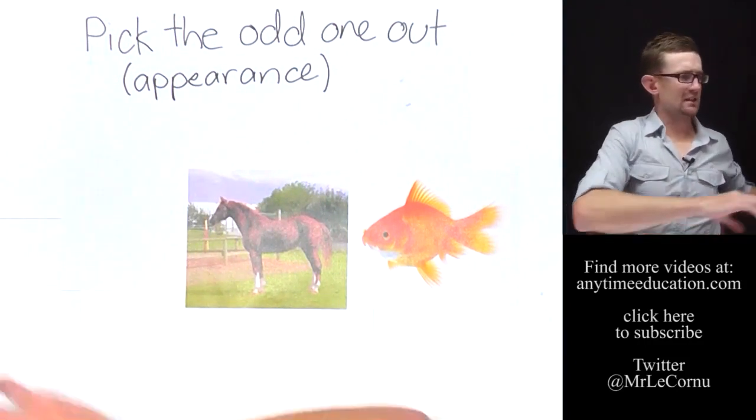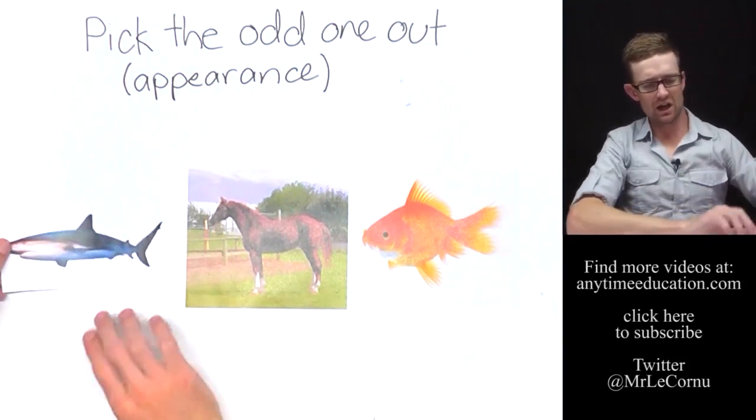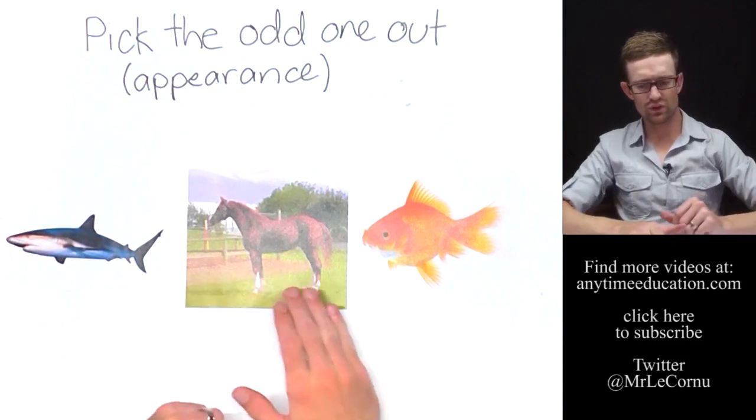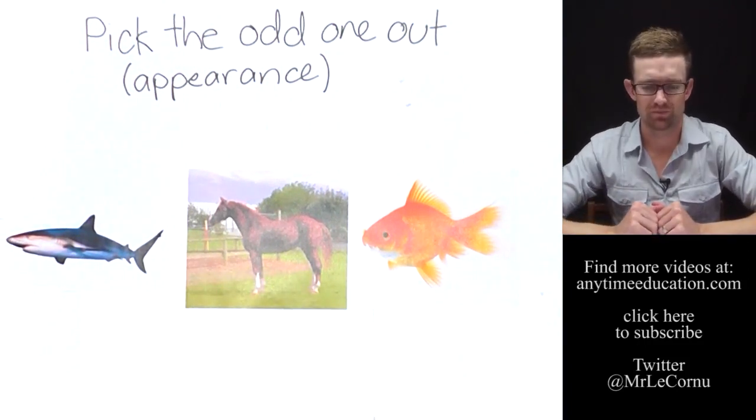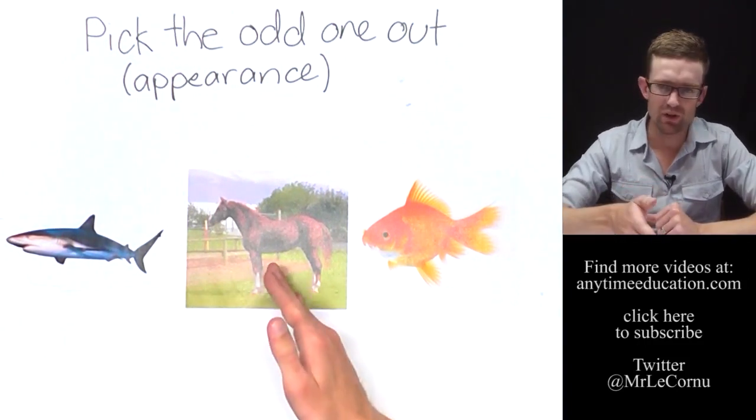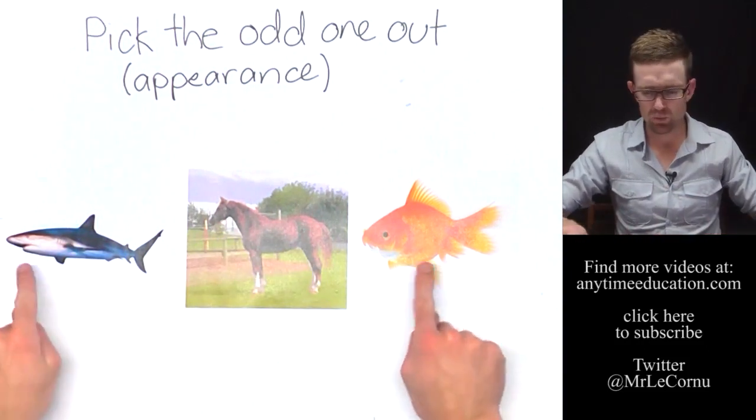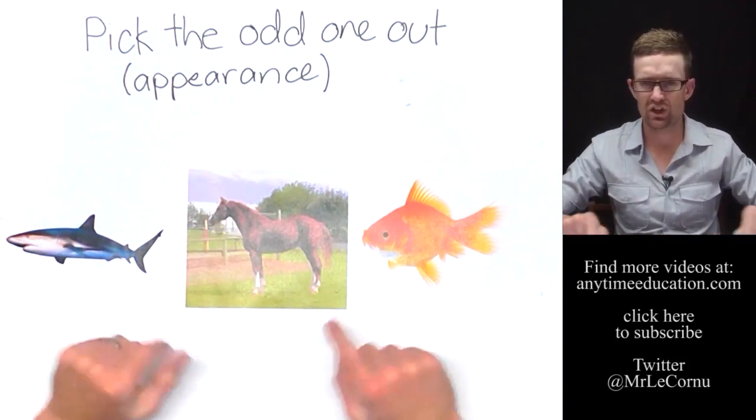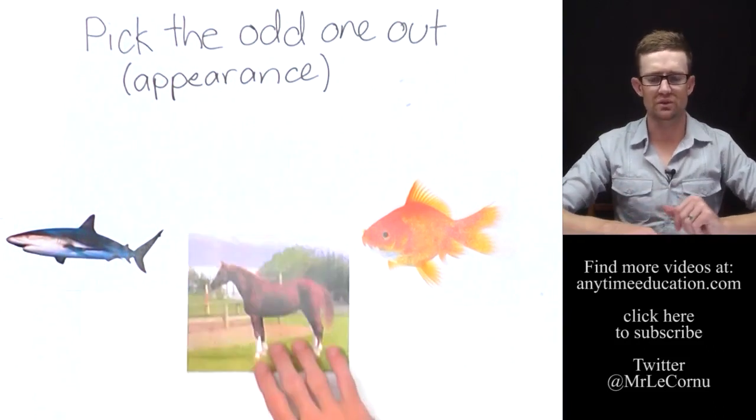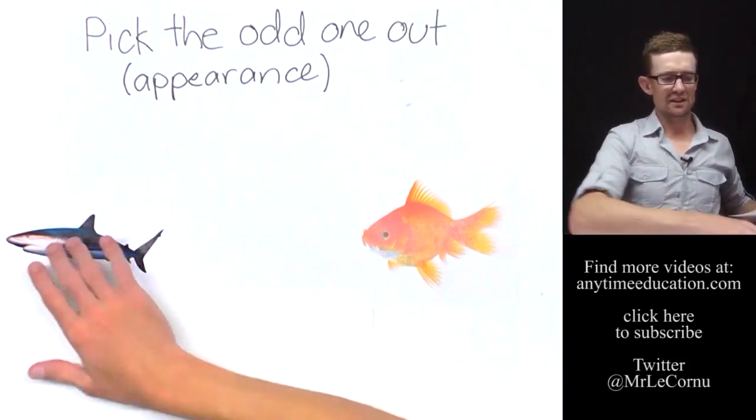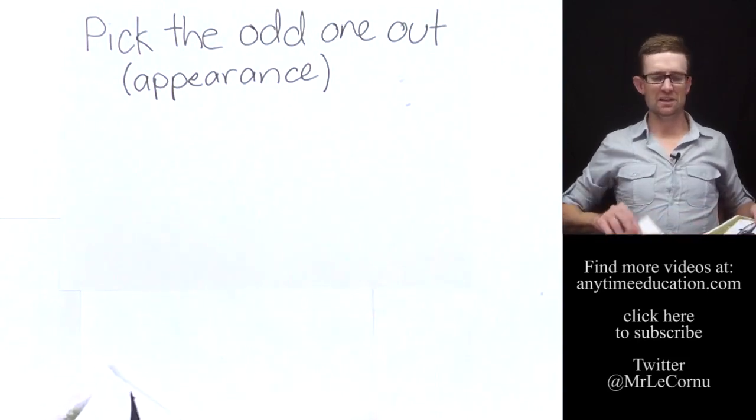Finally, what about shark, horse, and goldfish? Then we'd go for horse. Horse is the odd one out because there's more common features between a shark and a goldfish than there is with the horse. So that's that game of pick the odd one out based on appearance.